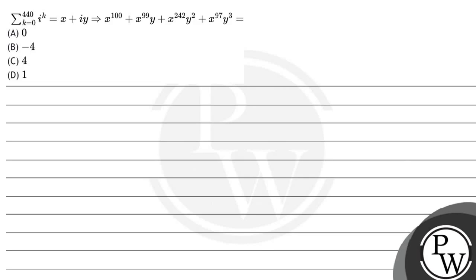Hello Bacho, let's see this question. The question says: Sigma K equals 0 to 440, iota power K equals x plus iy.